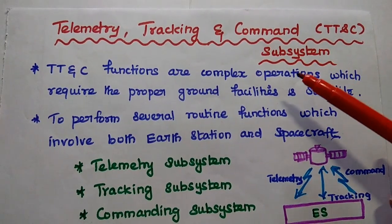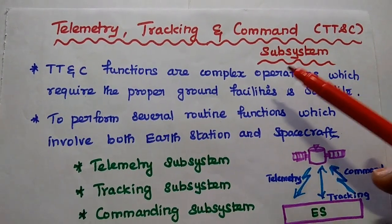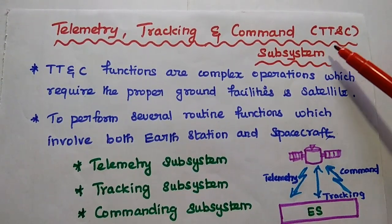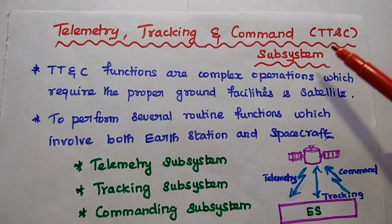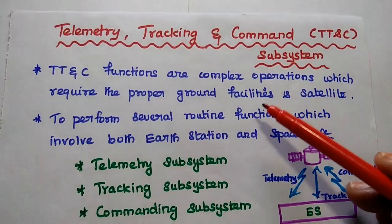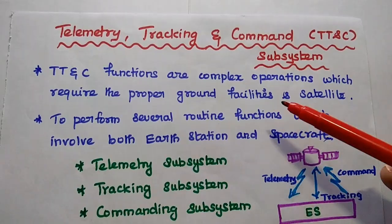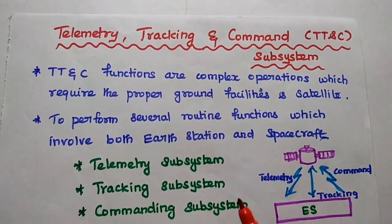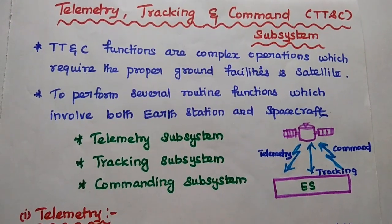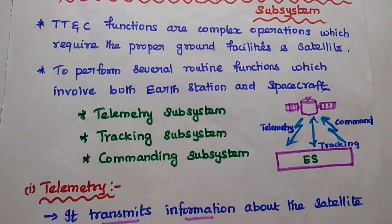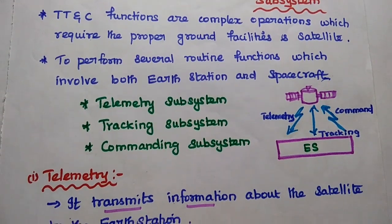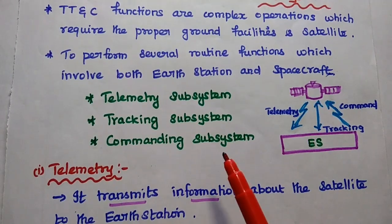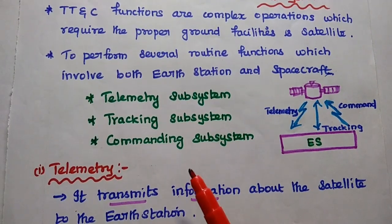Dear students, now we are going to discuss telemetry, tracking and command subsystem in satellite communication, simply called the TTNC subsystem. This subsystem is mainly used to perform three complex functionalities which require proper earth station facilities and space segment facilities. These three functionalities are: the first one is telemetry subsystem, then tracking subsystem, and the third one is the commanding subsystem.